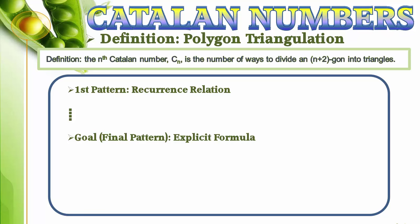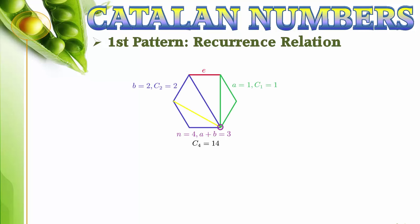We start out with a triangulated n plus 2 gone and fix one of the polygon's edges, e. If we remove edge e, we are left with two distinct triangulated polygons that share one vertex, as shown in this diagram. Let the polygon clockwise from e have a plus 2 vertices, and the polygon counterclockwise from e have b plus 2 vertices. Note that order matters here, since the reverse order is a reflection, which is counted as distinct.